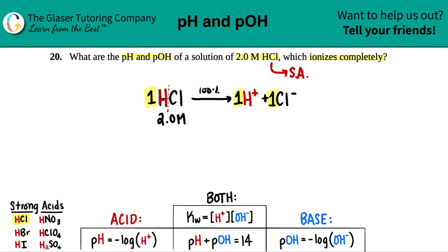So since you started off with two molarity, the H plus is also two molarity. And one to one, that means that the chloride ion would also be two molarity.